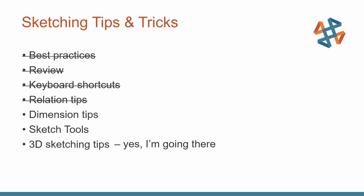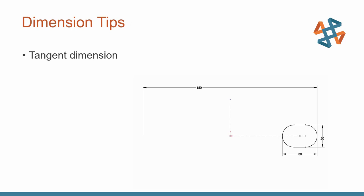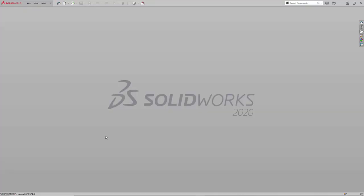Let's go from relations and talk briefly about some dimensioning tips. A couple of classic tips I always like to cover are dimensioning to the tangencies of arcs — I get this question quite a bit. Shift is the key to success there. Another dimension I always get questions about is that doubled value — represented on screen by that 150 millimeter dimension. Let's jump back into SolidWorks and go through how we can add these types of dimensions on the fly.